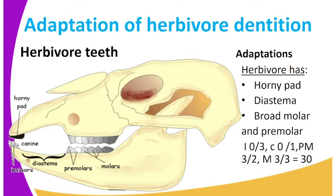So, we have the broad molars and premolars. The broad molars and premolars are for grinding and chewing. And you can see the dentition of herbivores.